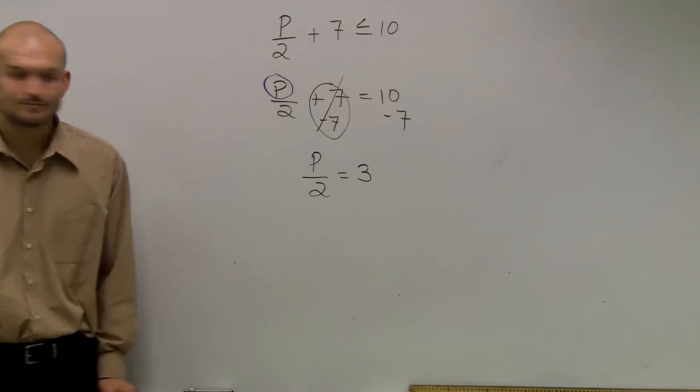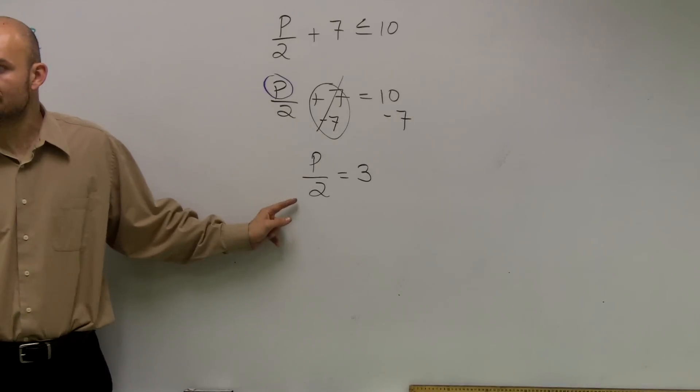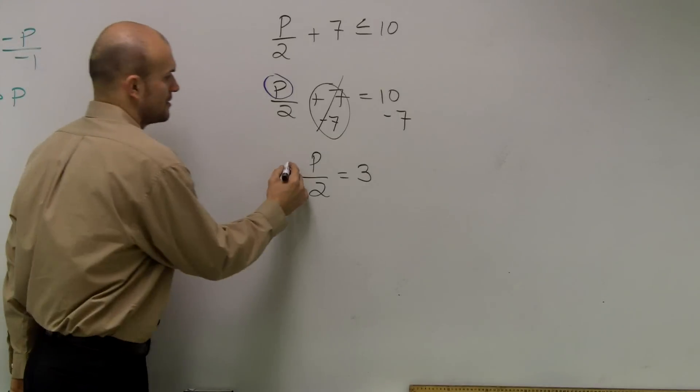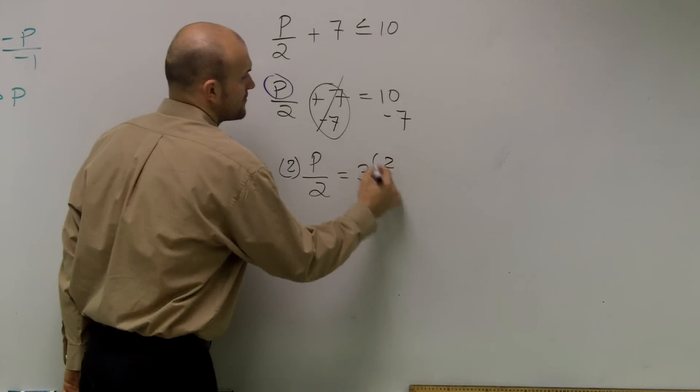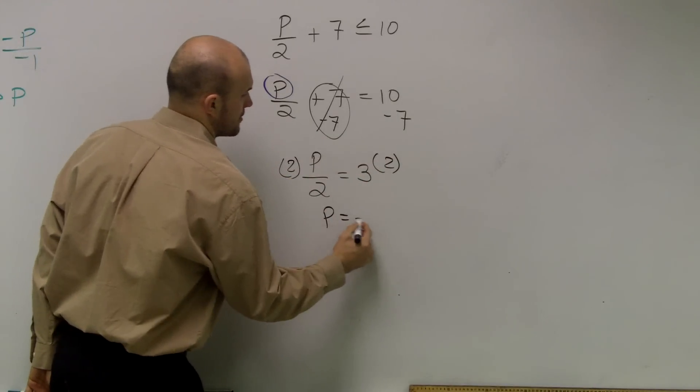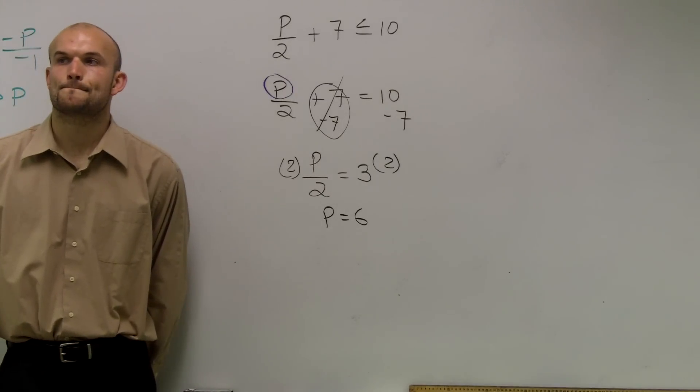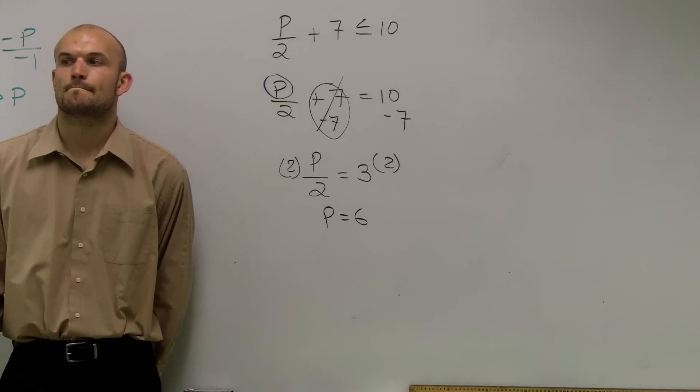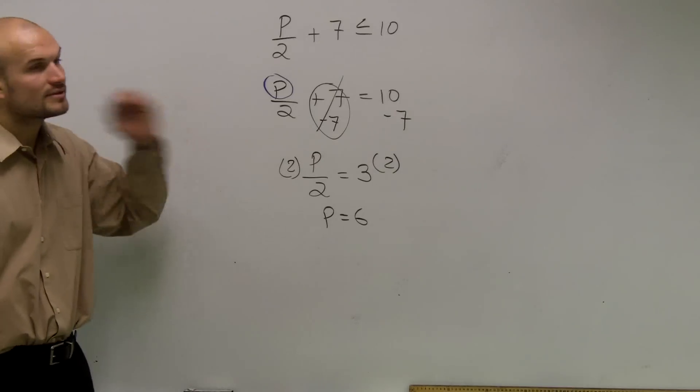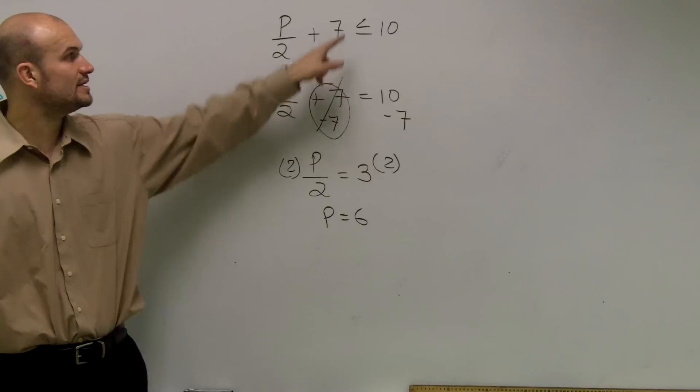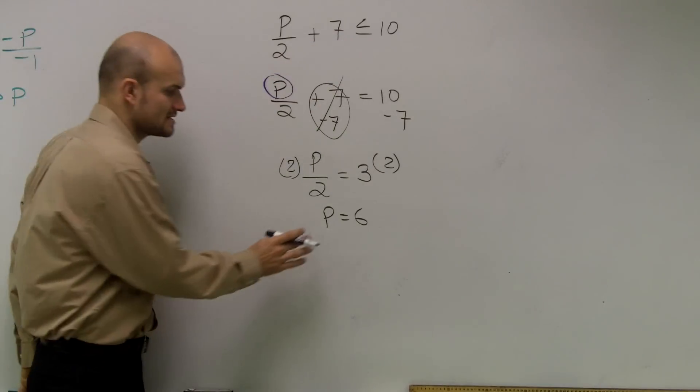So now I need to undo division by 2. So to undo division by 2, I need to multiply by 2. p equals 6. Now, the last thing you need to do is, once you have it done, you need to plug back in your original inequality sign.